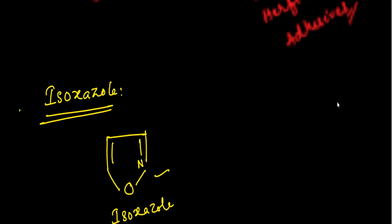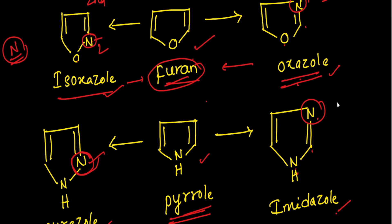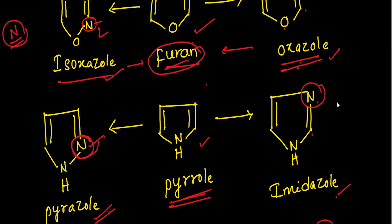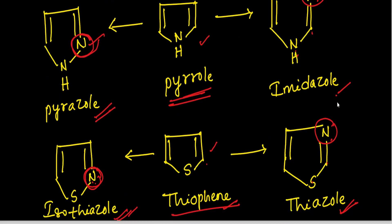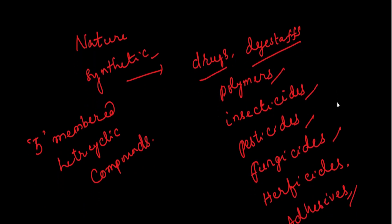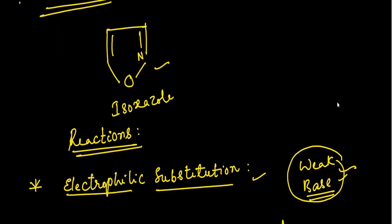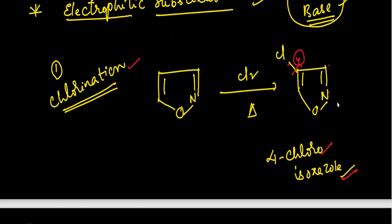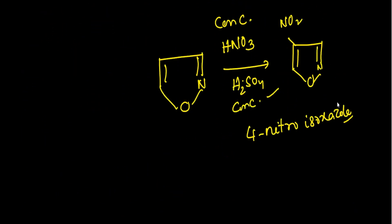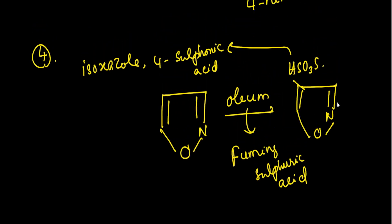So today we discussed heterocyclic compounds — how isoxazole and oxazole are formed from furan, pyrazole and imidazole from pyrrole, and isothiazole and thiazole from thiophene. We also covered the uses of heterocyclic compounds and the electrophilic substitution reactions of isoxazole: chlorination, bromination, nitration, and sulfonation. Next we will discuss more topics on this lesson. If you like this video, please share and subscribe.